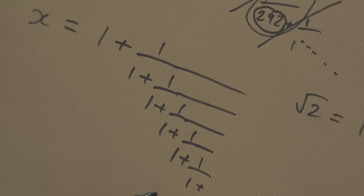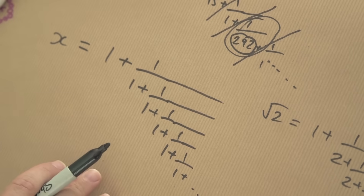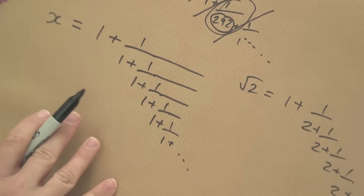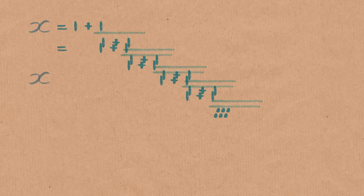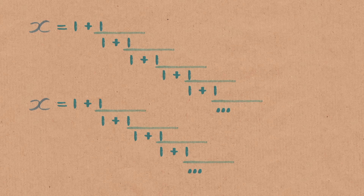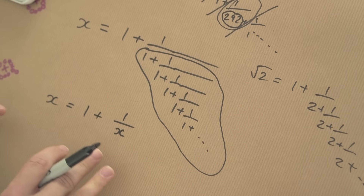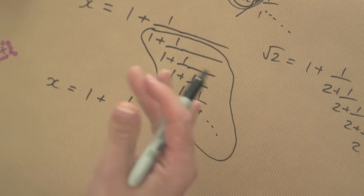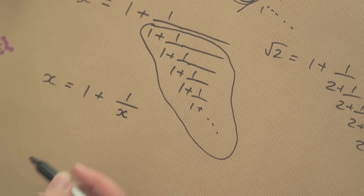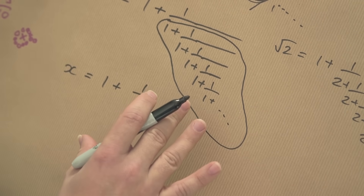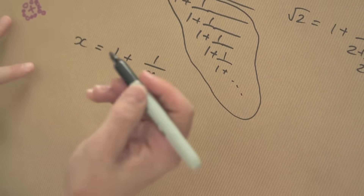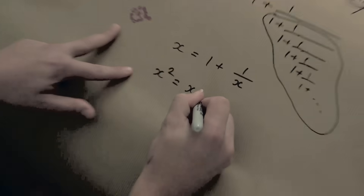I want to prove what this all-ones continued fraction actually equals. I'll call it x. The key insight is that the part after the first 1 is the same as the whole thing — it is also x. So I can rewrite this as x equals 1 plus 1 over x. That looks much less scary. In fact, it's a quadratic equation. Multiplying by x gives x squared equals x plus 1.